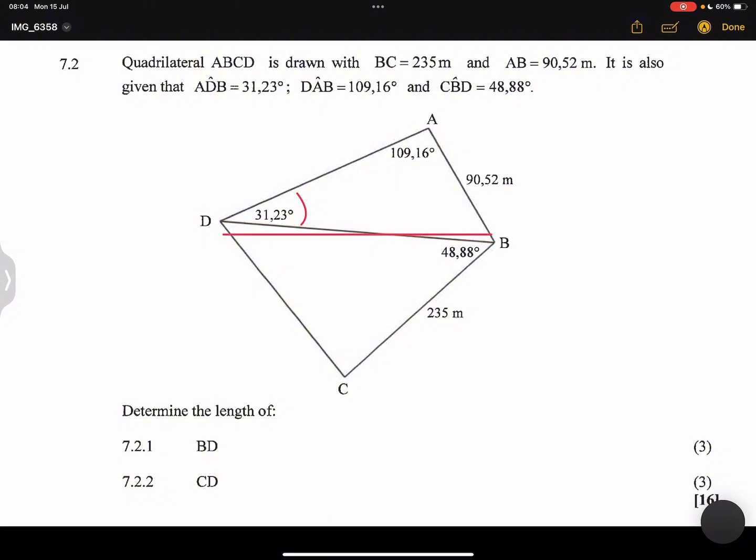Now we always start with the triangle that has the most information. And you can already tell that triangle ADB has got more information. Now look at this. We've got two angles and one side. So that clearly tells us we're going to use the sine rule. Now if you remember what I said about the sine rule, we use it when we've got two angles and one side, or sometimes when we've got two sides and one angle, but it must not be two sides and the angle in between them.